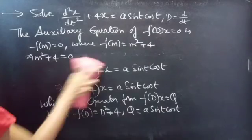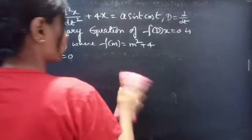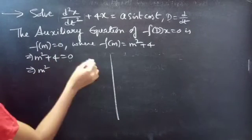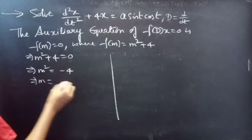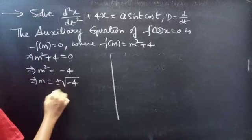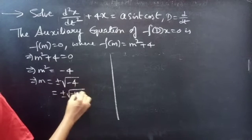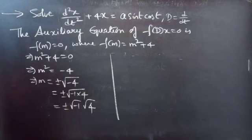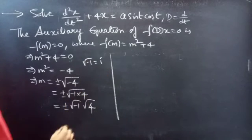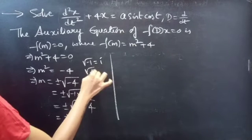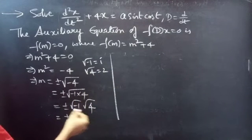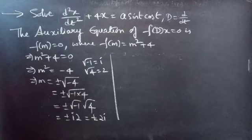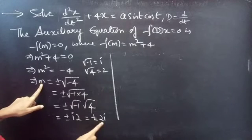Now find the roots. We can find roots in two ways. Taking +4 to the RHS gives m² = −4, so m = ±√(−4) = ±√(−1·4) = ±√(−1)·√4. Since √(−1) = i and √4 = 2, we get m = ±2i, which are imaginary roots.